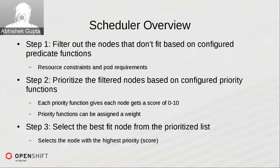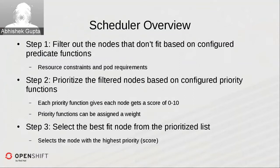In the scheduler overview, the first step takes the list of all nodes in the system that are available and schedulable, and filters out those that do not fit the pod's requirements. Requirements a pod could state include things like certain hosts, certain ports, certain disk volumes, or certain resources. Basic filtering of nodes that don't fit the pod's requirements are taken into consideration.